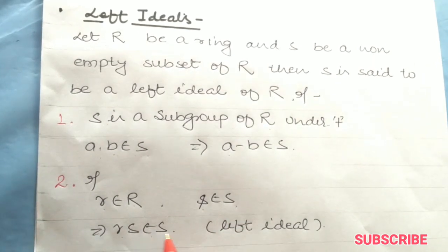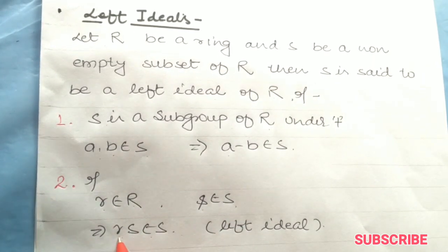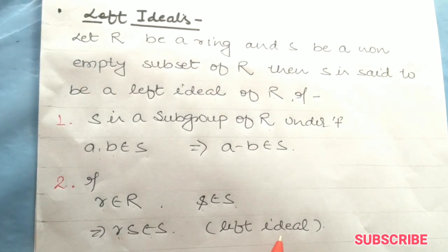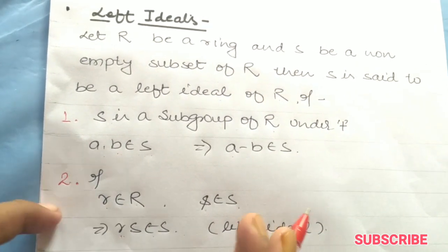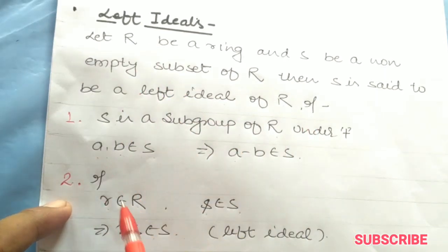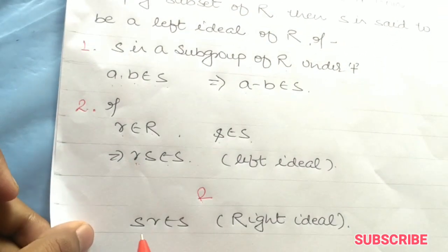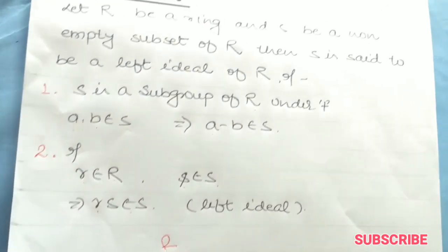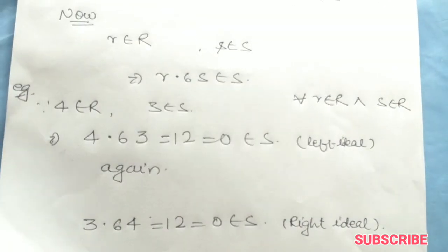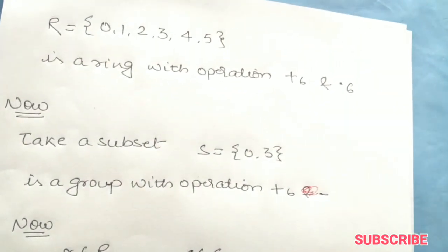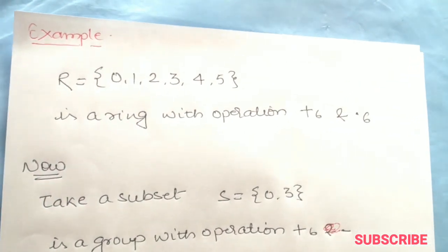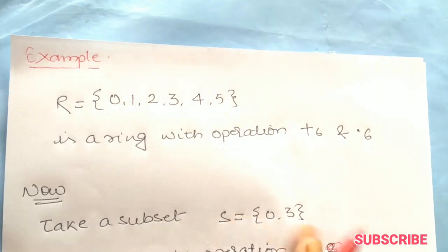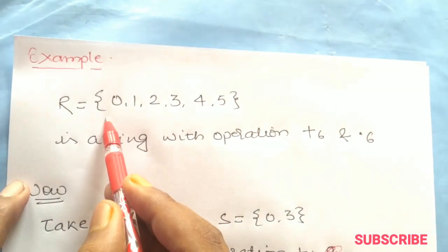If r is in R and s is in S, then rs is in S. This is the left ideal. Right ideal is the same thing. Now we will show some examples.